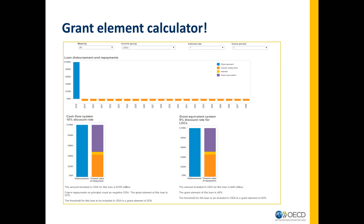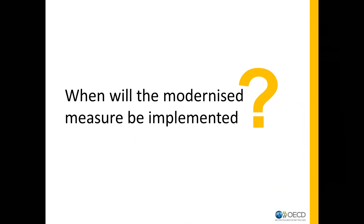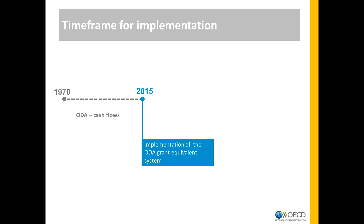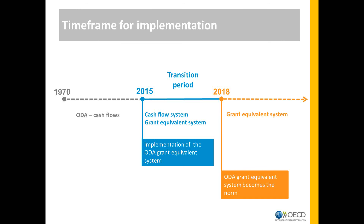Check out the grant element calculator to compare the resulting ODA for loans in the current and modernized measure. When will the modernized measure be implemented? The changes will be implemented starting with 2015 data. Over a transition period of three years, the old and new ODA measures will be collected in parallel, and from 2018 data onwards, the new measure of ODA will become the norm.